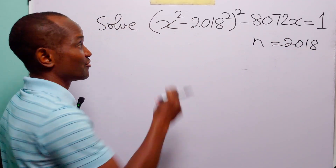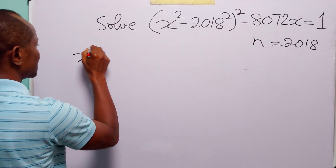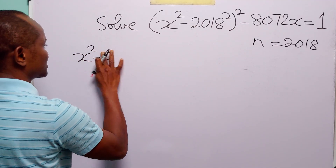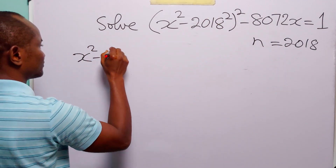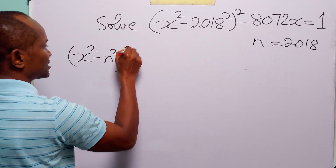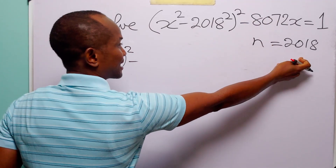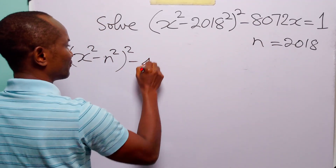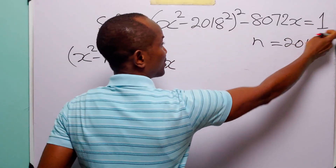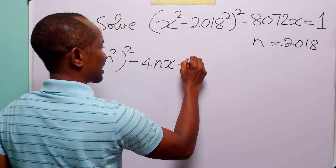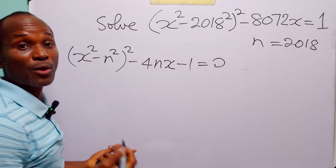Then you're going to rewrite the equation. You'll write it as x squared minus n squared, both squared, minus — remember this is four times n, so it becomes 4nx — then we bring the one over to the left-hand side: minus 1, and this is equal to zero.